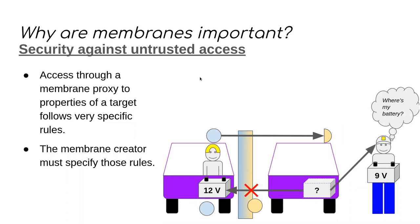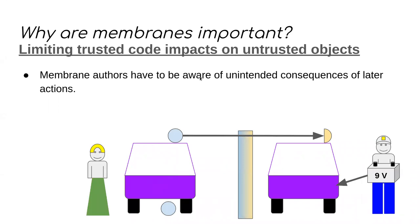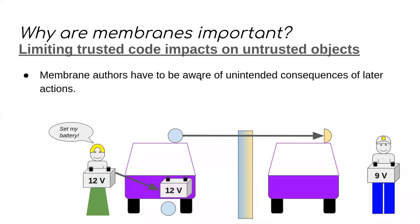Considering the reverse direction: if the proxy handler for the car wasn't written correctly, Alice setting her battery property would propagate all the way out to Bob's proxy. And when Bob went to look for his battery, it wouldn't be his battery anymore — and that's bad.